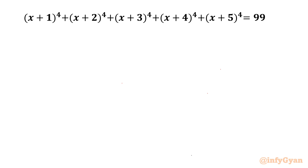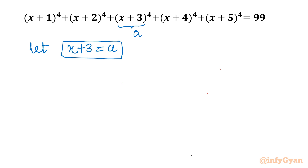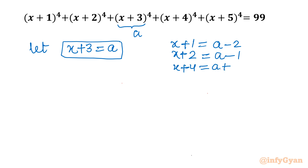Let us get started by considering our substitution. Let x + 3 = a. If x + 3 is a, then x + 1 will be a − 2, x + 2 will be a − 1, x + 4 will be a + 1, and x + 5 will be a + 2. Let us put all the values into the original equation.